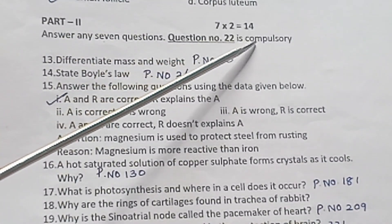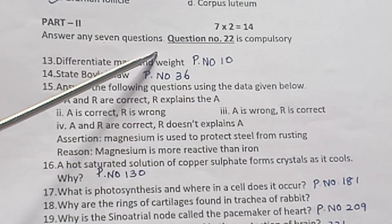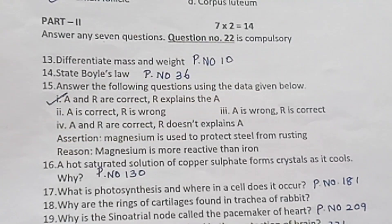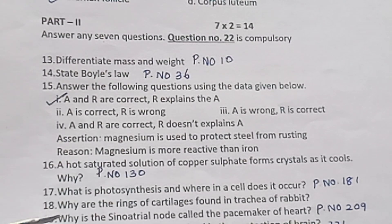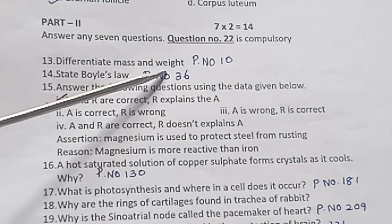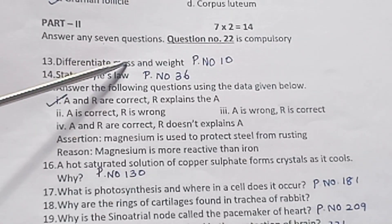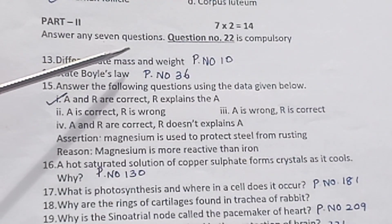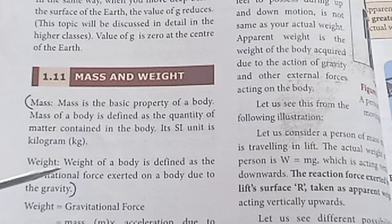Part 2: 7 into 2 equals 14. Answer any 7 questions. Question number 22 is compulsory. Question number 13: Differentiate mass and weight. Very important. May 2022 exam question. Page number 10. Tabulation form.